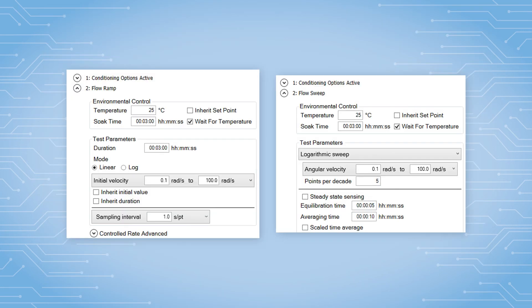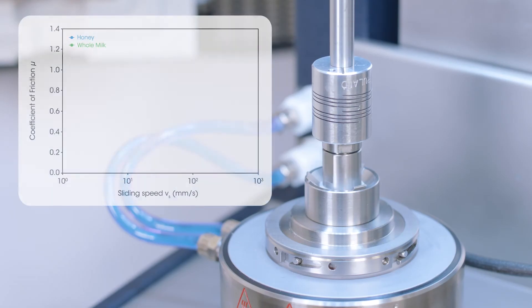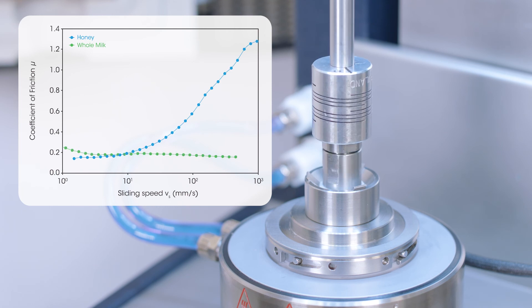The test procedure of measuring the coefficient of friction as a function of sliding speed can be either a flow ramp or a flow sweep. Here is one example of testing the coefficient of friction between a steel ball and three steel plates using milk and honey as a media.